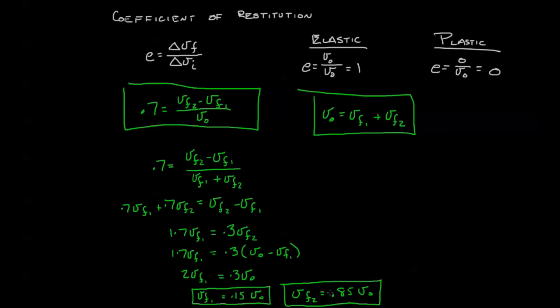Welcome back to our calculations. Hopefully you ended up with these two solutions right here, and you see that the final velocity of one was 0.15 V0, so it slowed down enormously. The final velocity of Cart two was 0.85 V0, so a lot of the energy was transferred.